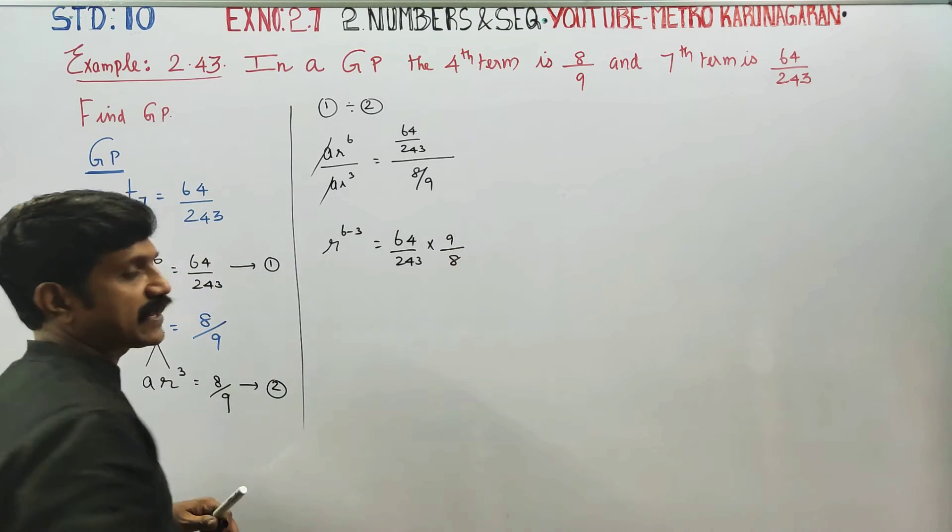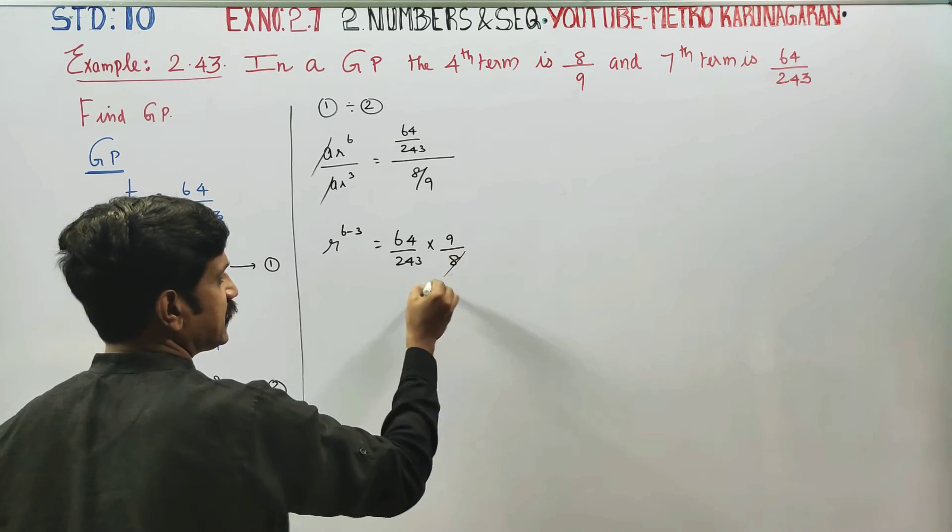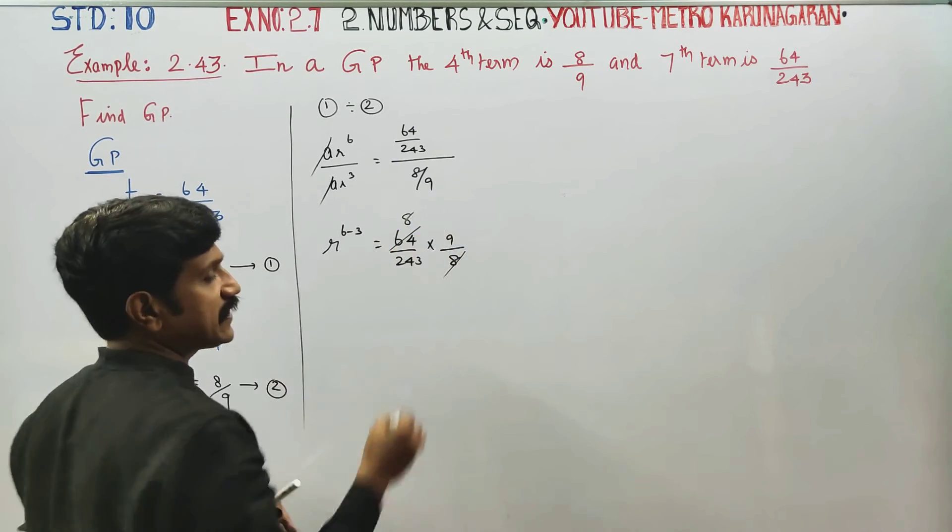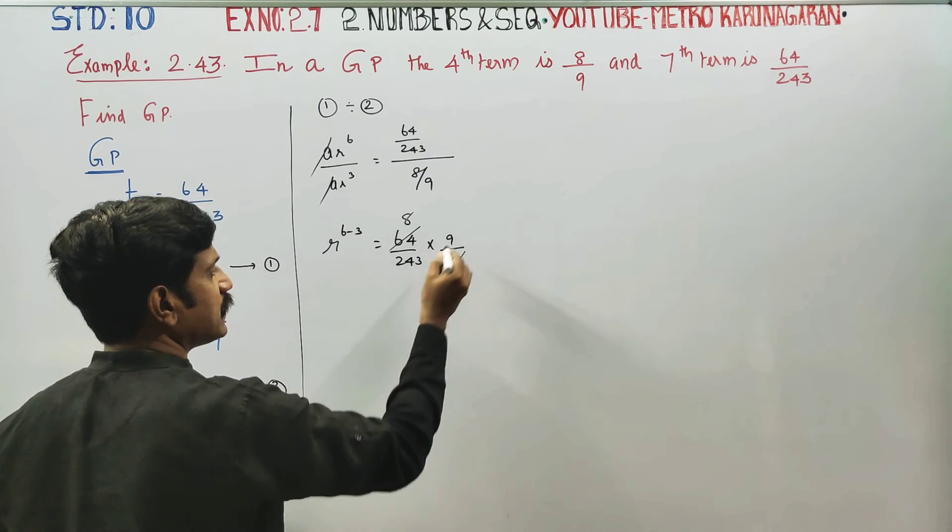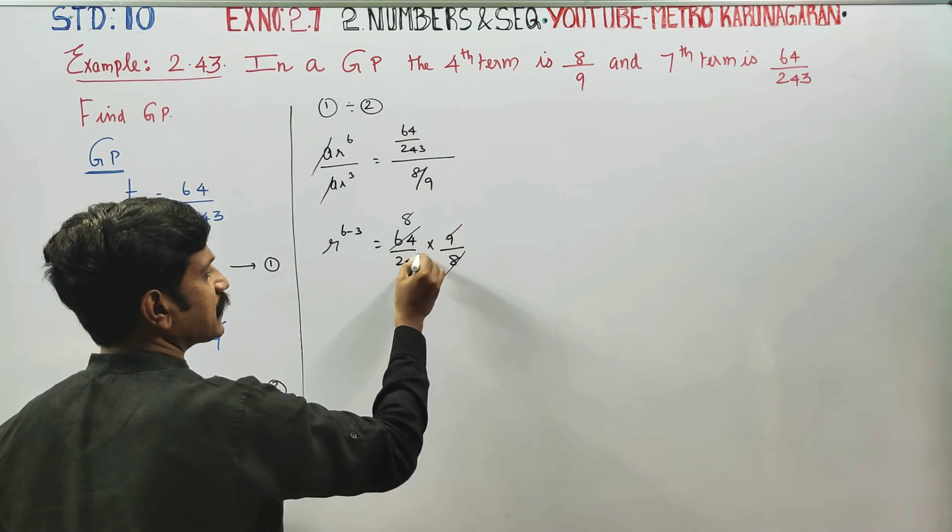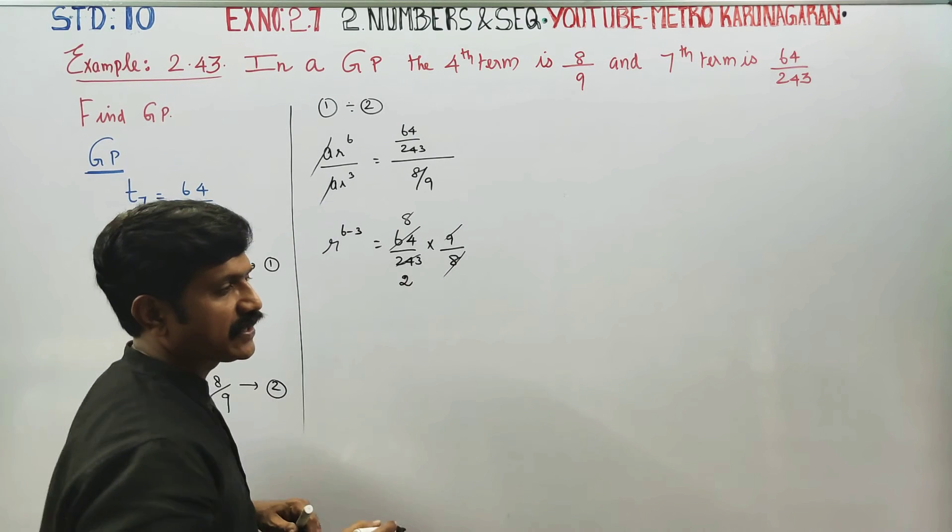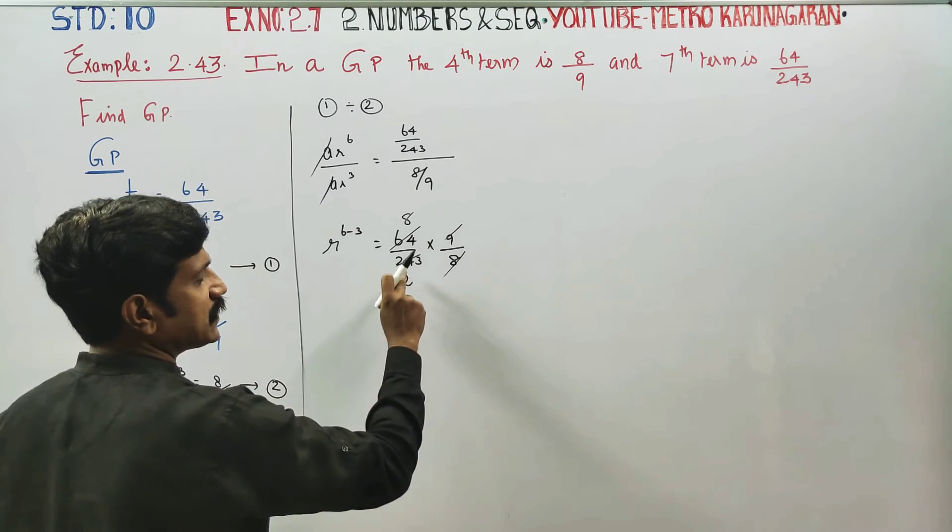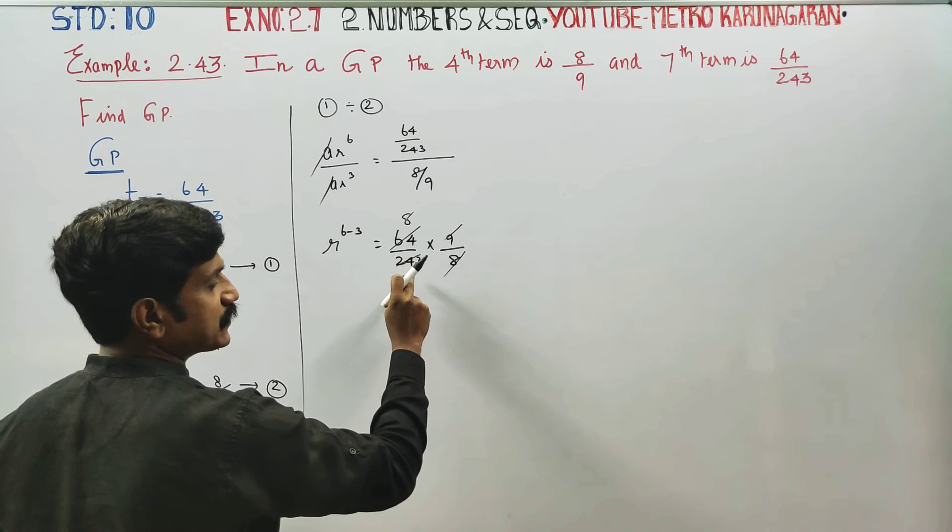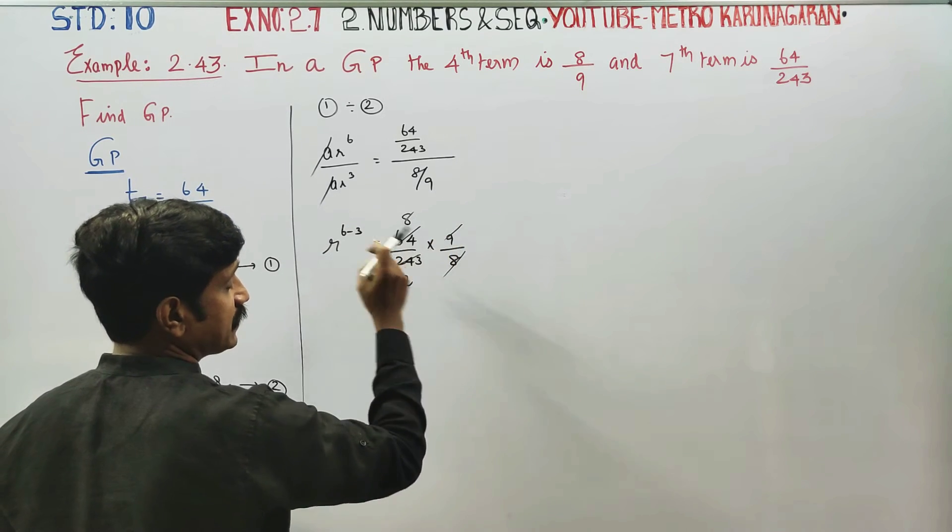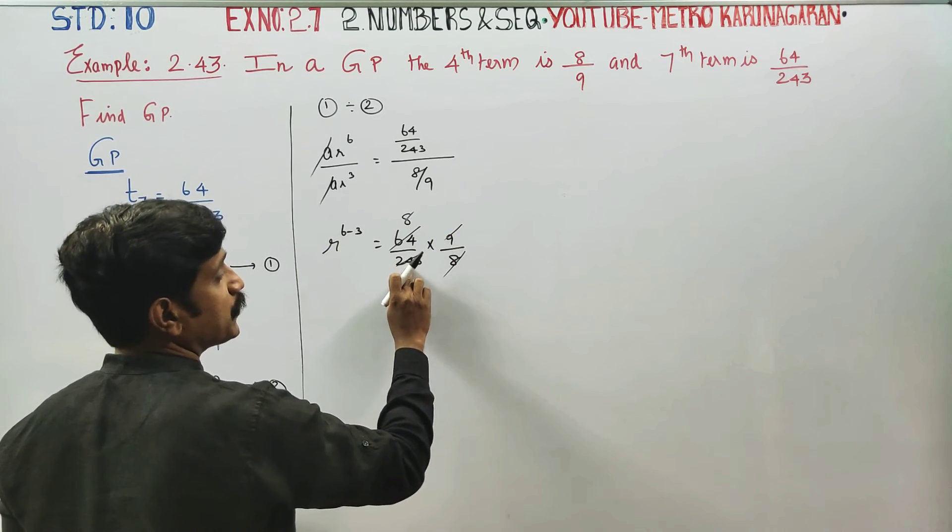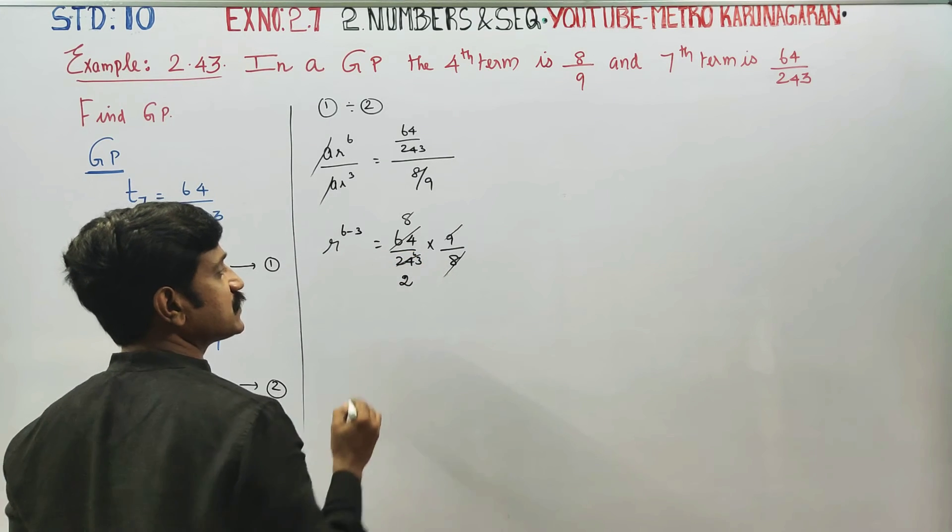9 by 8, 8 goes into 64. 9 tables are 16, 9 2's are 16, 24 is 14 minus, so 18. 9 2's are 18, balance minus 6 are 63.